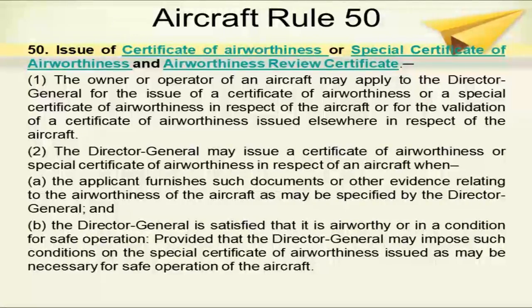The Director General may issue a CoA or special CoA in respect of an aircraft when the applicant furnishes such documents or other evidence relating to the airworthiness of the aircraft as may be specified by the DG, and the DG is satisfied that the aircraft is airworthy or in a condition for safe operation. The DG may impose conditions on the special CoA as may be necessary for safe operation of the aircraft, including extra limitations.